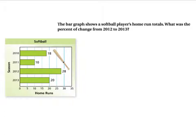Looking at another example, the bar graph shows a softball player's home run total. What's the percent change from 2012 to 2013? Here's obviously 2012, here's 2013. We went from 28 down to 20. Now remember, we can't have a negative here. We are talking about a percent change and we noticed that it went from 28 down to 20.